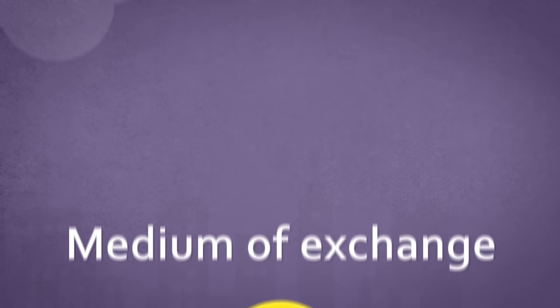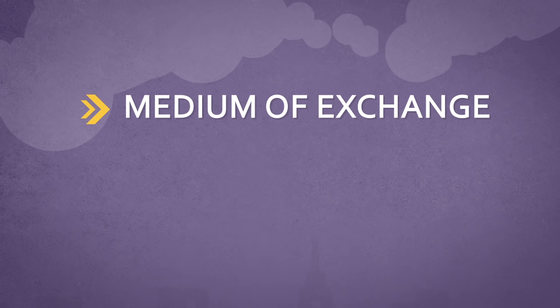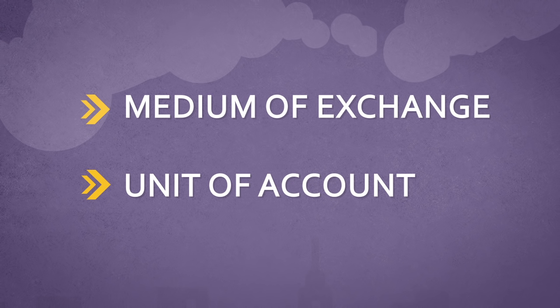Money has specific properties. It is a medium of exchange, which allows us to avoid the problems that Catherine had. It's also a unit of account and can be used as a measure of costs and revenues through market prices. Here are some characteristics of money that allow it to be used this way.